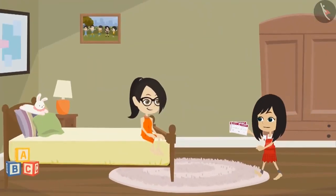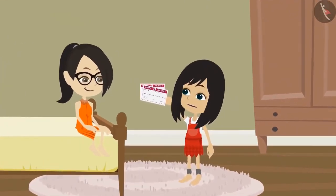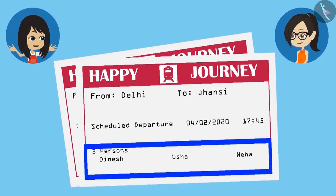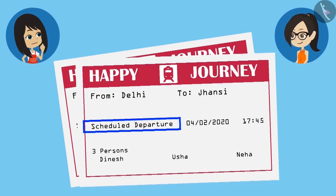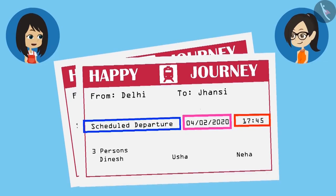Here are the tickets — one to go to Jhansi and one to come back from there. Let's see what all are mentioned on the ticket. Look, it has Mummy, Papa's and my name written on it. It is also written that this train will go from Delhi to Jhansi. And what is this written? Scheduled departure. What is the meaning of this? I don't know, but the date is written in front of it. And something else is written as time, but it is not time.